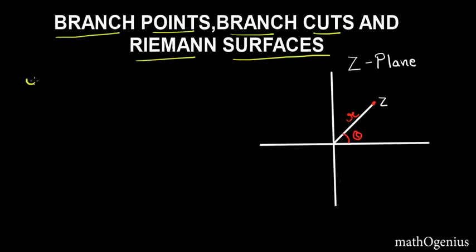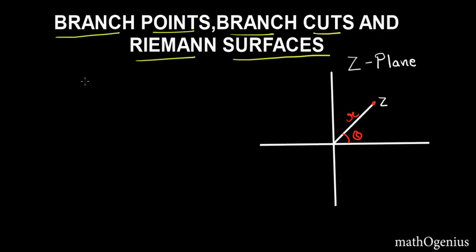For example, y = √x — in real analysis, for one value of x we get two values of y. This is a multivalued function, so it's uncertain which value we are going to take. Similarly, in complex analysis we also have multivalued functions, and they do not work well — we have to stick with one value. If we take different values, our mathematics becomes very unpredictable.